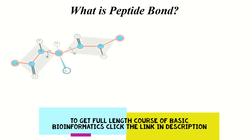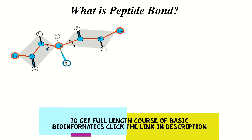Once the peptide bond is formed, there will be Psi and Phi. Phi is a bond between the alpha-carbon and the carbonyl carbon which is involved in peptide bond formation, while Psi is a bond between the alpha-carbon and the nitrogen of the amino group which participated in peptide bond formation.